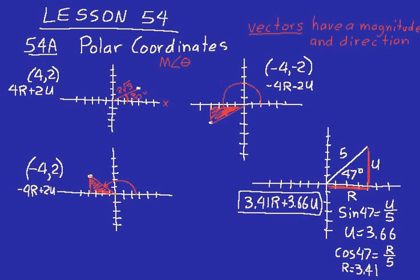My graph wasn't exactly to scale — if you just looked at it, you'd say R was equal to 4, but we got 3.41. So just trust the trigonometry instead of my graph. Writing it in terms of R and U — writing rectangular coordinates that way — is just like writing a point 3.41, 3.66. It means the same thing; it's just a different notation, a different way of describing that. Polar coordinates are also a different way of describing the location of a point. You use a magnitude and a direction, and that identifies this point. So there's more than one way to identify a point on a Cartesian coordinate system.